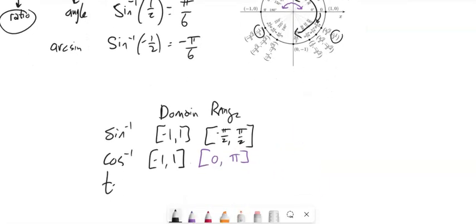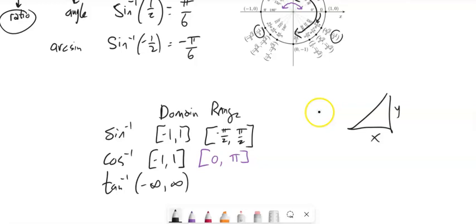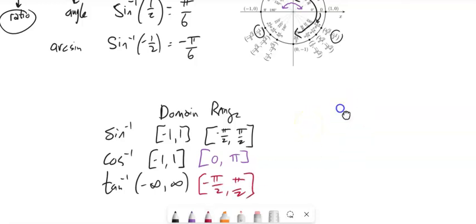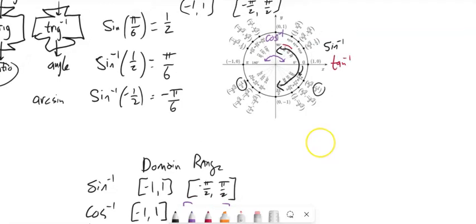Lastly, inverse tangent. Tangent is the slope function — how steep it is. Tangent can take in any value because y over x can be any ratio: y can be really big and x small, or vice versa. Just like sine, inverse tangent lives in the first and fourth quadrant, giving you values in that range running all possibilities for angles.